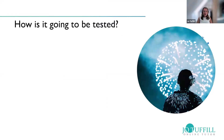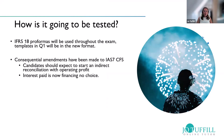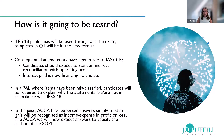IFRS 18 will be used throughout the exam and templates in Question 1 will be in the new format. Consequential amendments have been made to IAS 7 cash flow statements, and candidates should expect to start an indirect reconciliation with operating profit. Interest paid is now classified as financing — there is no longer a choice; it used to be allowed in the operating section. Where items in a P&L have been misclassified, candidates must explain why the statements are not in accordance with IFRS 18, and must specify which section of the statement of profit or loss the item belongs to.